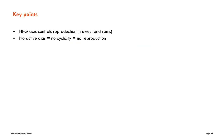The key points are that the hypothalamic pituitary gonadal axis controls reproduction in ewes — as well as rams, but for this talk we're focusing on the female. It's really key to know that if this axis is not active, if there is no production of GnRH or the gonadotrophins, then there's going to be no cyclicity. The ovary will not be operational, there will be no ovulations, and if there are no ovulations then there can be no reproduction.